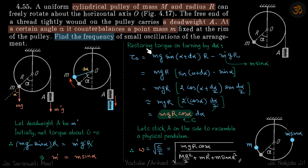Now let's write the restoring torque about point O. Restoring torque is torque due to this mass minus torque due to the other. Torque due to this mass is mg times the distance, which is r sin(alpha plus d alpha).